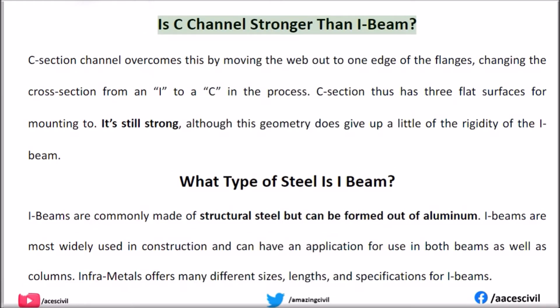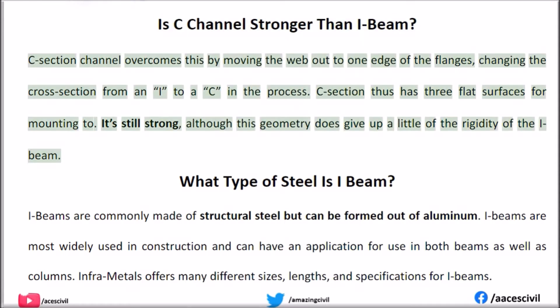Is C-channel stronger than I-beam? C-section channel overcomes this by moving the web out to one edge of the flanges, changing the cross-section from an I to a C in the process. C-section thus has three flat surfaces for mounting to. It's still strong, although this geometry does give up a little of the rigidity of the I-beam.